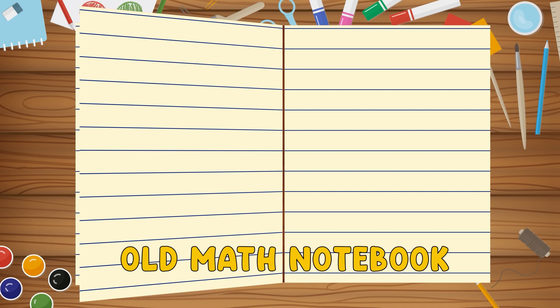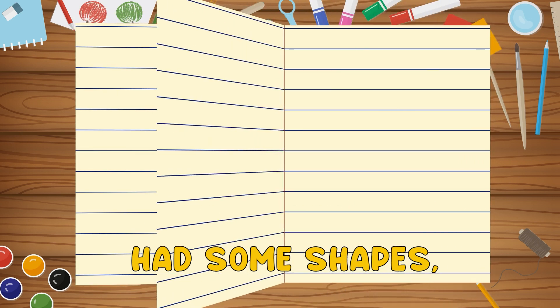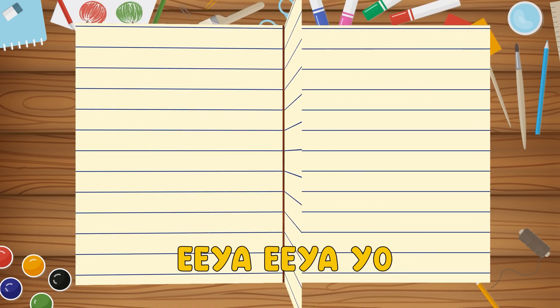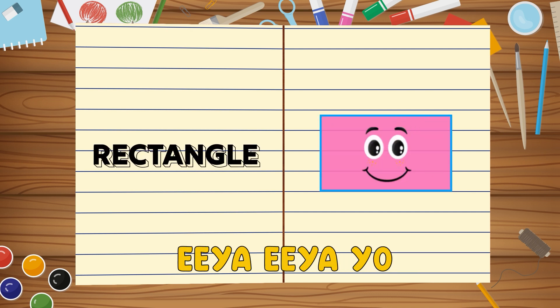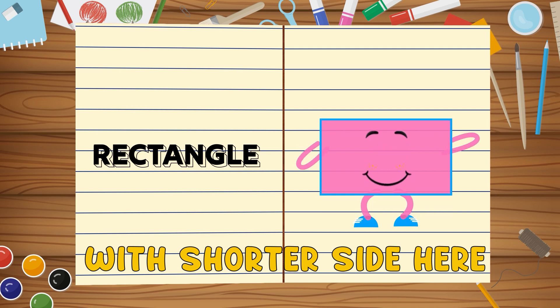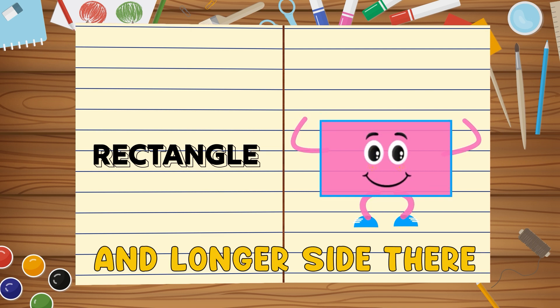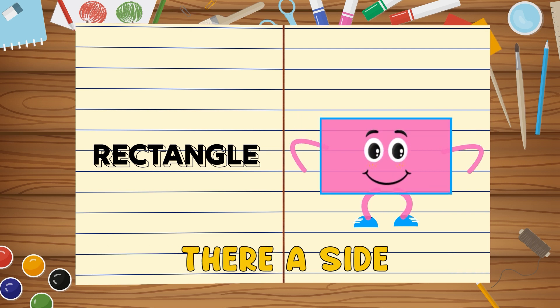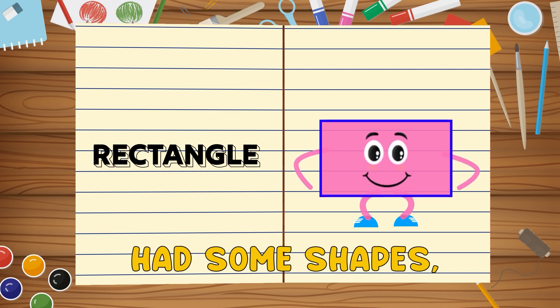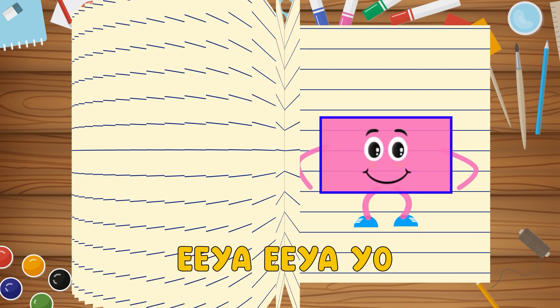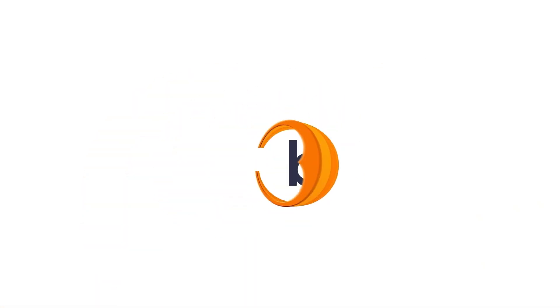Old math notebook had some shapes, E-I-E-I-O. Next close shape is the rectangle, E-I-E-I-O. With shorter side here and longer side there, here a side, there a side, it had four sides. Old math notebook had some shapes, E-I-E-I-O.